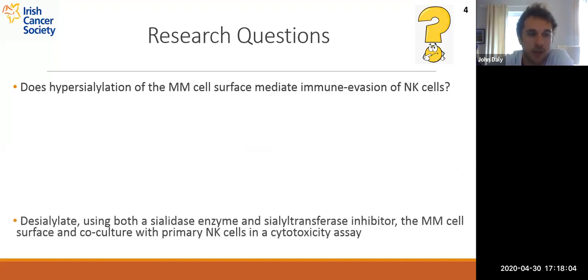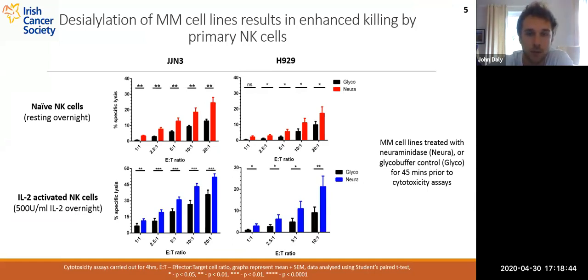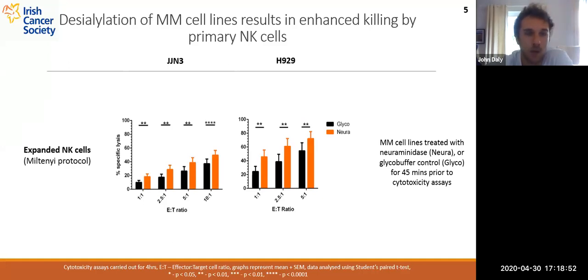To answer our first question, we desialylated the myeloma cell surface using both a sialidase enzyme and a specific sialyltransferase inhibitor, then co-cultured these myeloma cells with primary NK cells in cytotoxicity assays to measure myeloma cell death. We desialylated myeloma cell lines JGN3 and H929 using sialidase and co-cultured them with three types of primary NK cells: naive NK cells, IL-2-activated NK cells, and expanded NK cells. At all E:T ratios for all primary NK cell types tested, there was a strong increase in killing of the desialylated myeloma cells versus the sialylated control. The NK cell expansion protocol used was from Miltenyi Biotec, and all data shown from here on was gathered using expanded NK cells.